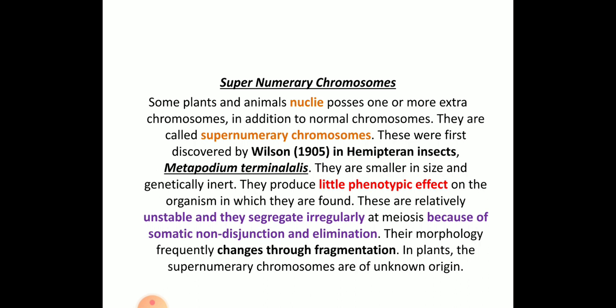Coming to supernumerary chromosomes: these chromosomes are present in both plant and animal nuclei. They were discovered by Wilson in hemipteran insects. They produce little phenotypic effect, are unstable, prone to non-disjunction and elimination, and their morphology frequently changes through fragmentation.